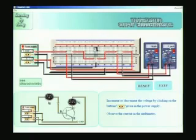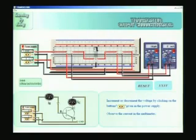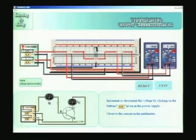At 0.5 volts VCE the IC is 0.1 milliamperes. At 1 volt it is 0.5 milliamperes. At 1.5 volts it is about 1 milliampere. At 2 volts it is 1.5 milliamperes. At 2.5 volts it is about 2 milliamperes. At 3 and 3.5 volts it remains at 2 milliamperes. Beyond 2.5 volts, even going up to 6, 7, or 8 volts, the milliammeter shows the same IC value of 2 milliamperes.